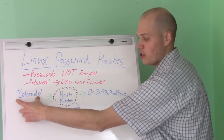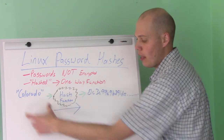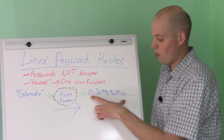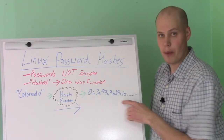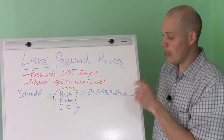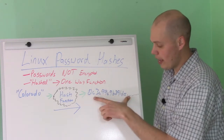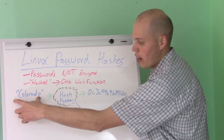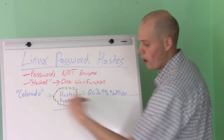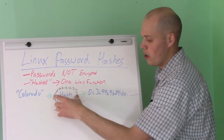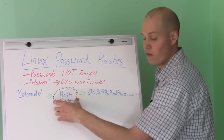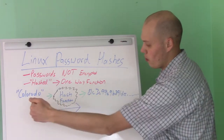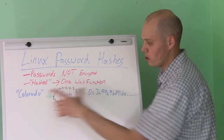So if, let's say, our password is Colorado, and we run it through a hash function, what you'll get is a big long hexadecimal number. Basically, you can't take the hash and reverse it to get back to the password. It's only one way — you take your password, run it through this hash function, which is a complex mathematical equation, and you get your hash. But it's only one way; you can never reverse the process.